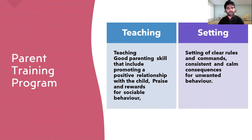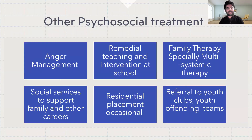The parent training program, as mentioned, is the mainstay of treatment in Conduct Disorder, and involves teaching parents about parenting skills and setting rules for their child. Other psychosocial treatments include anger management, remedial teaching for learning disability, family therapy — especially multi-systemic family therapy, which has proven effective — social services to support the family and other siblings, residential placement when occasionally needed, and referral to youth clubs and youth offending teams.